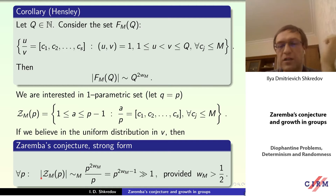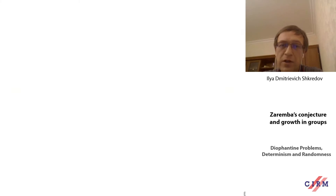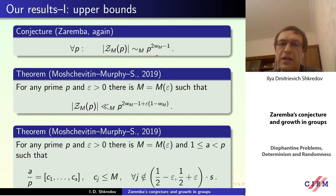If we believe in the uniform distribution in the denominators, then we need to divide the previous bound by the number of denominators: p to the 2W_m over p. We obtain a quantity, and you see that if the Hausdorff dimension is greater than one half, then this quantity tends to infinity. In particular, the size of my Zaremba set tends to infinity. That was the motivation of Hensley — it doesn't depend on any particular alphabet, just we need that the Hausdorff dimension is greater than one half.